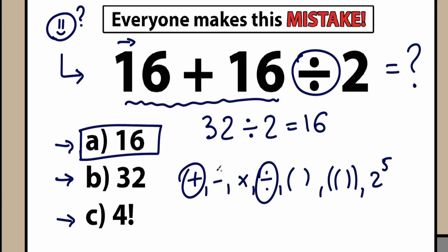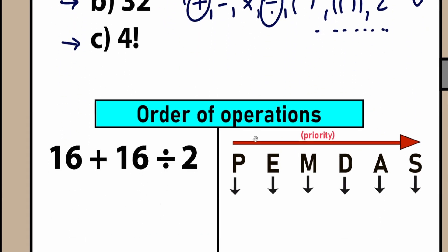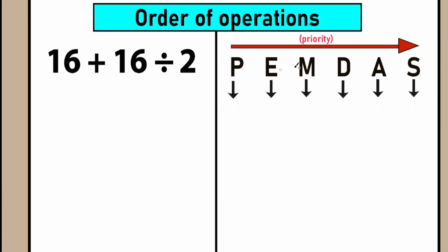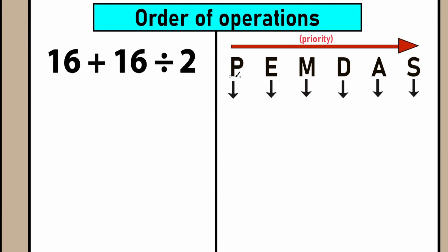Whenever we have an expression with all these things — addition, subtraction, multiplication, division — we need to order this according to the correct order of operations, the correct algorithm. I'm going to show you the thing called order of operations, which is PEMDAS. You may also know it as BODMAS order of operations, depending on what country you live in, but the meaning is absolutely the same.